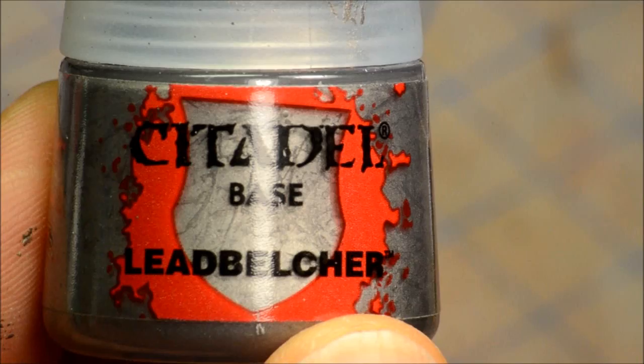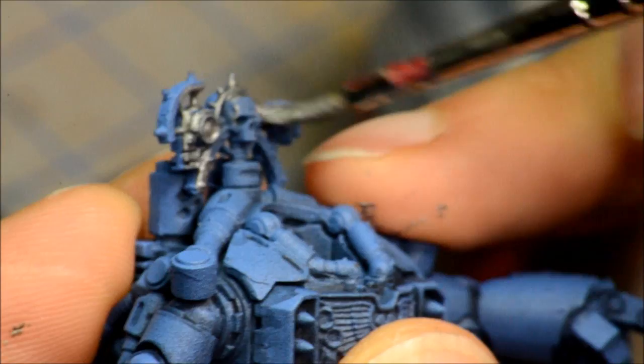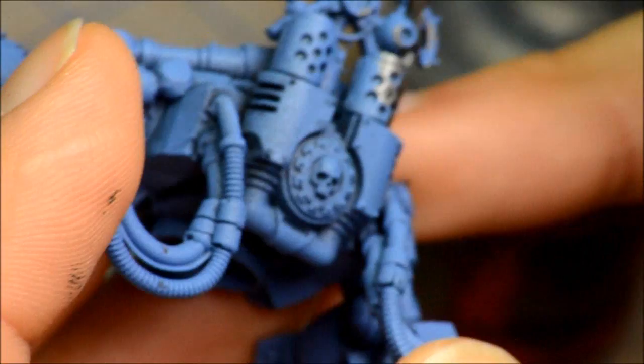So here's the partially assembled guys. I painted them up with Army Painter blue and silver sprays and left the heads and shoulder pads off. The legs were one assembly and the torso was another. I'm painting the Leadbelcher here on the silver bits.